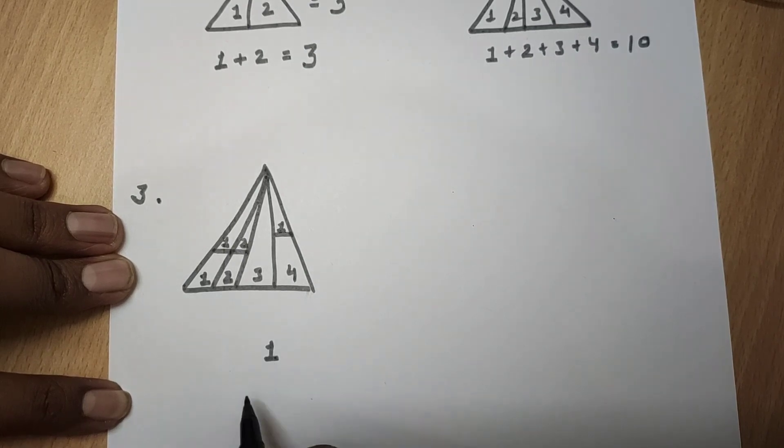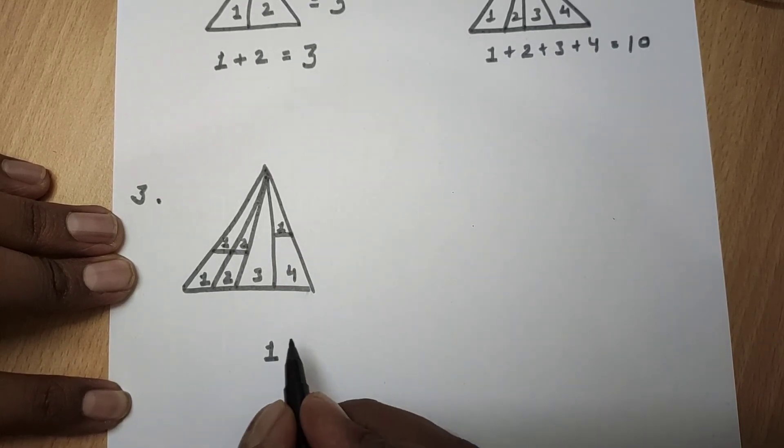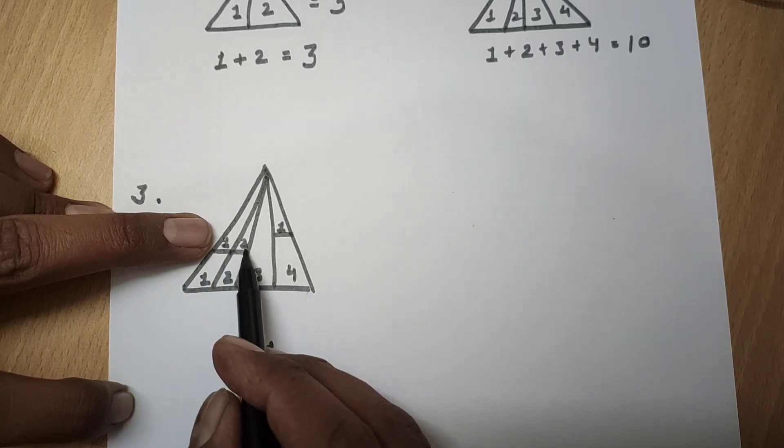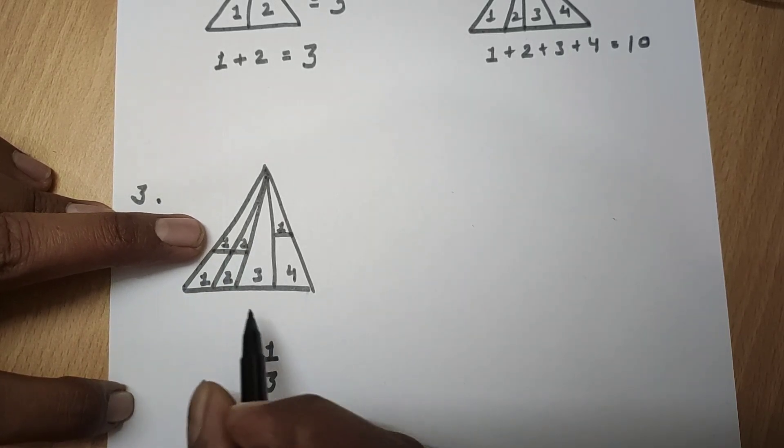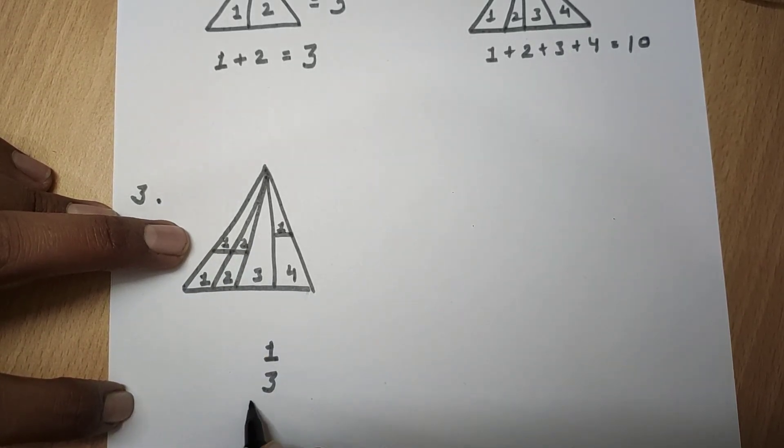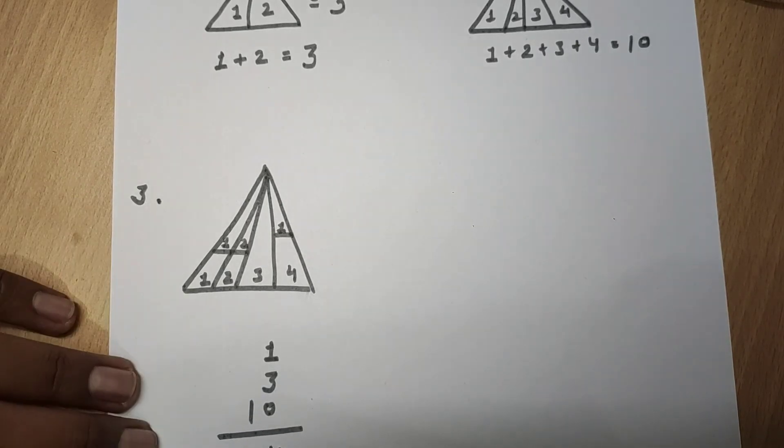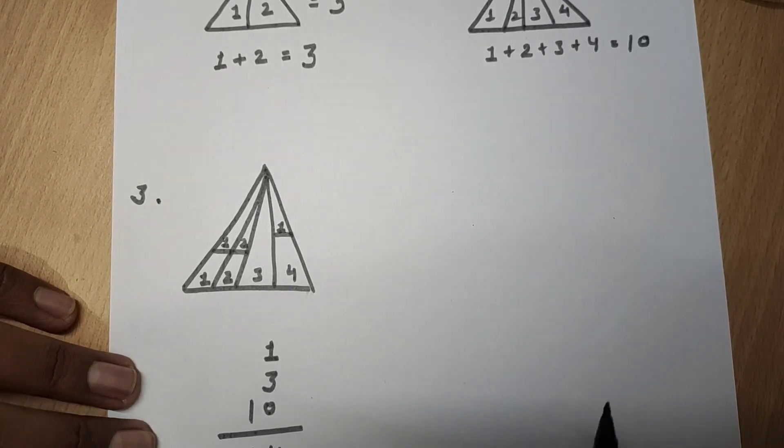First of all, 1. This 1 is 1. Then add this 1. 1 plus 2, 3. Then add this 1. Then add this 1. Then 10 will go. Then all this 1 will go total. So 14 will go. This means how many triangles have? 14 triangles.